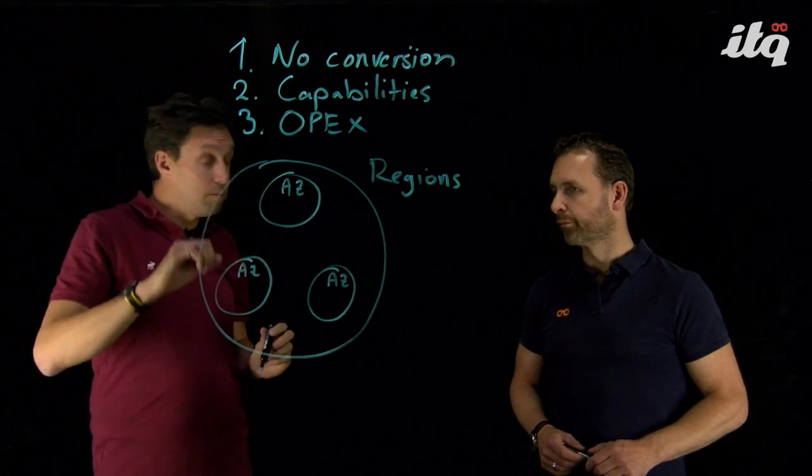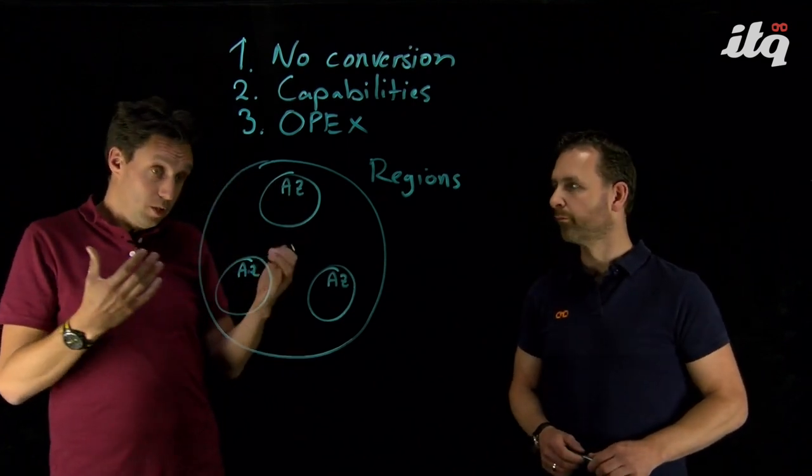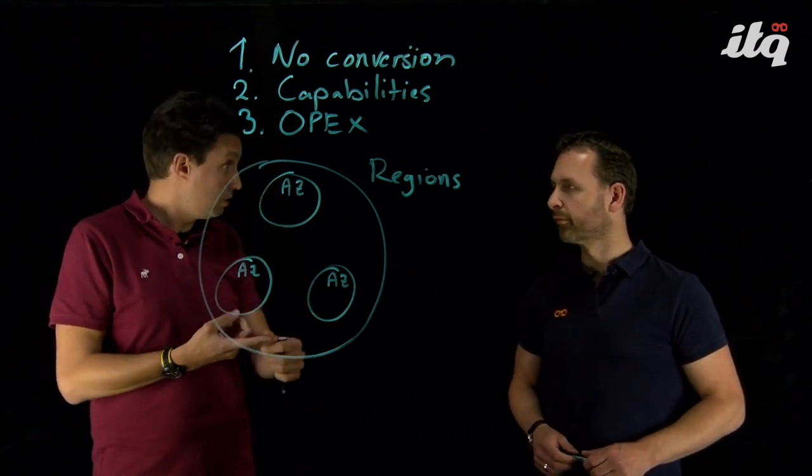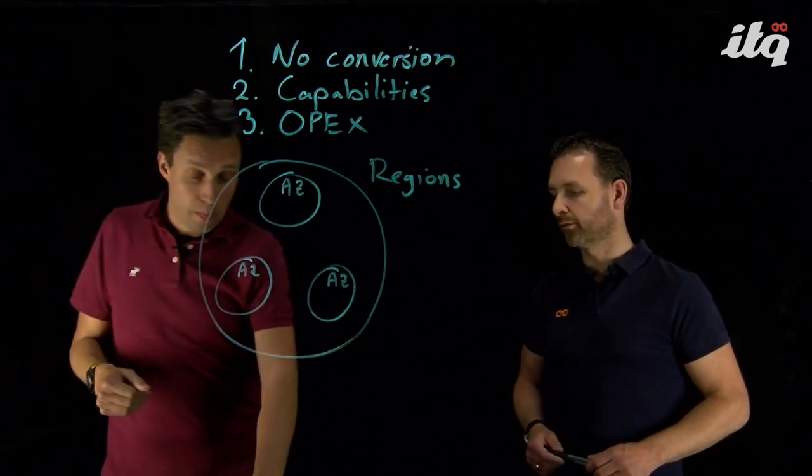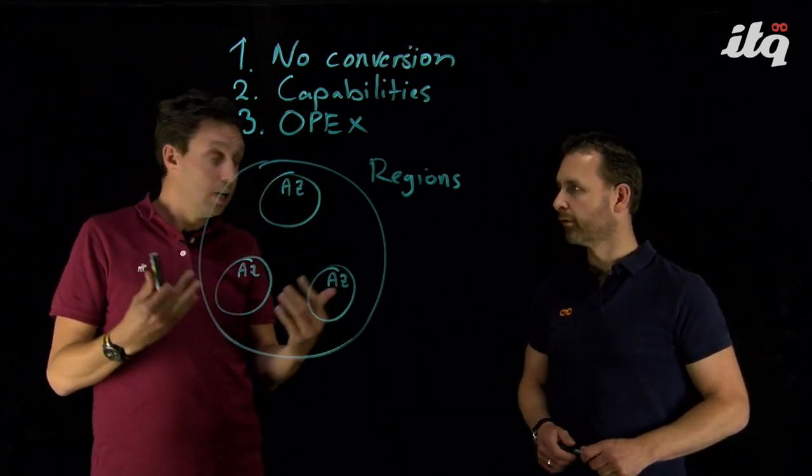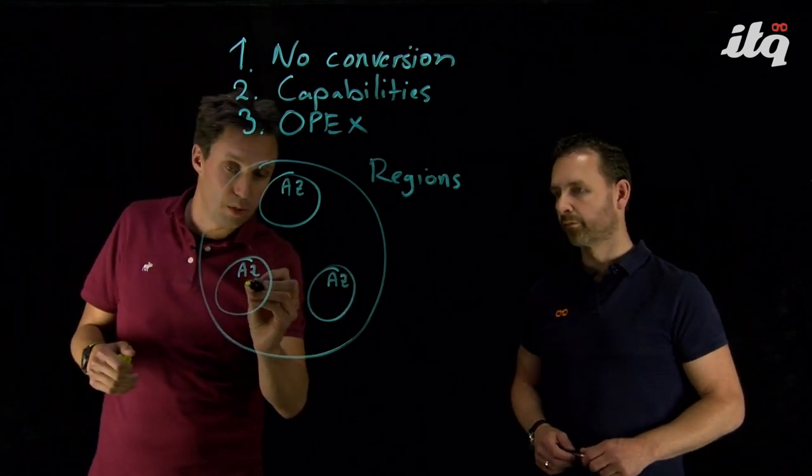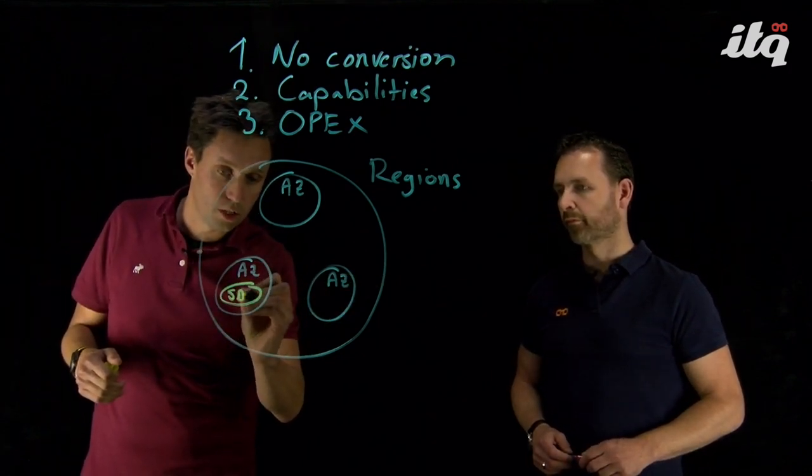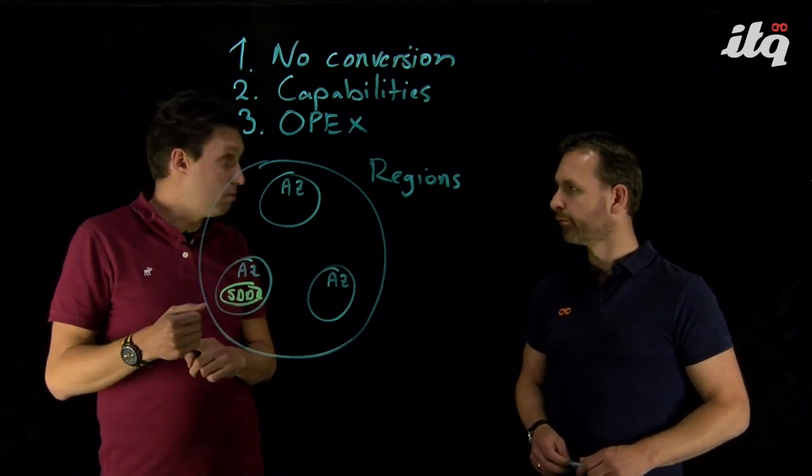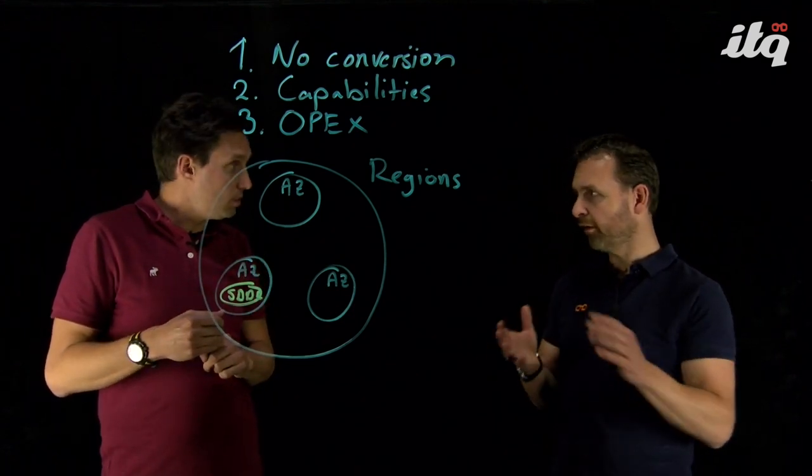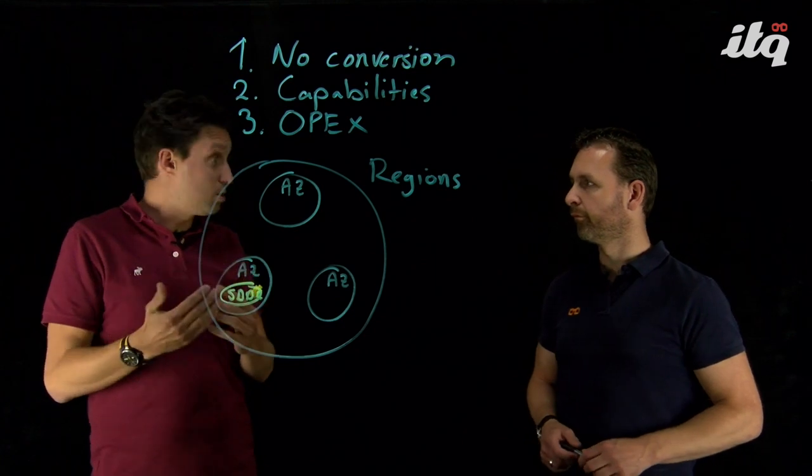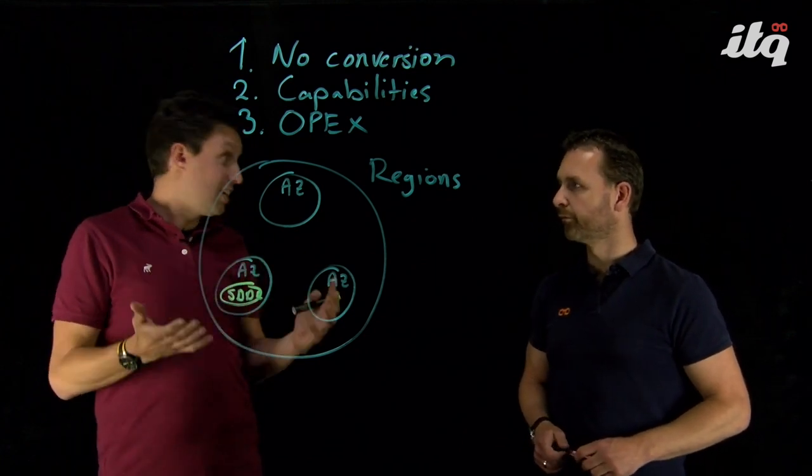So when you consume VMware Cloud on AWS, you consume a software-defined data center as a service. And the software-defined data center includes vSphere, vSAN, NSX. The initial deployment, the smallest deployment for VMware Cloud on AWS is three hosts. And these three hosts will be deployed to one of the availability zones. So let's say you're requesting your first software-defined data center. It will be deployed to this availability zone. And is it nested virtualization or how is it running? This software-defined data center is running on AWS bare metal hosts. So it's not nested.